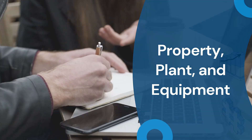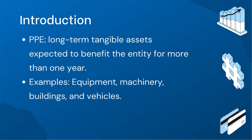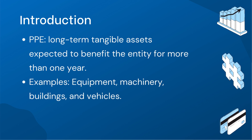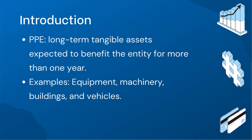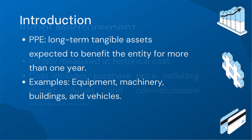Property, plant and equipment, also known as fixed assets, are tangible assets that provide long-term benefits to an entity and are used for production, supply, and administrative purposes. These assets play a crucial role in supporting business operations and are expected to contribute to the entity's success for more than one year.